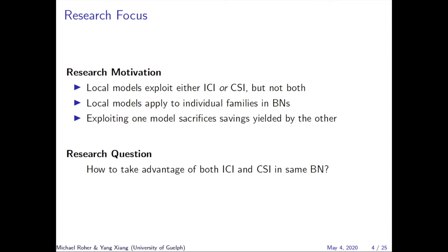This leads us to our research problem. These local models exploit either ICI or CSI, but not both. Since ICI and CSI apply to individual families of variables in Bayesian networks, they can coexist in an environment. In such cases, methods that exploit one type of local model lose the efficiency savings yielded by the other type. In this work, we explore how to take advantage of both ICI and CSI in the same Bayesian network.